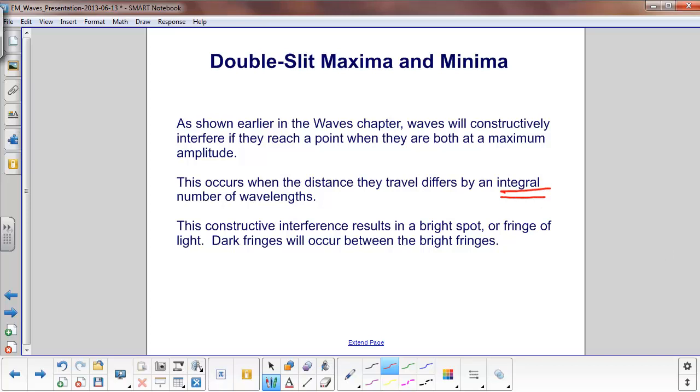The constructive interference will give you a bright spot, or it's typically called a fringe of light. Dark fringes will occur between the bright fringes.